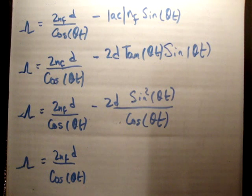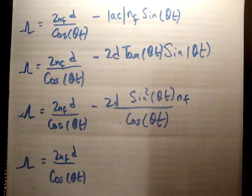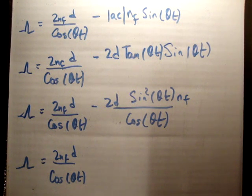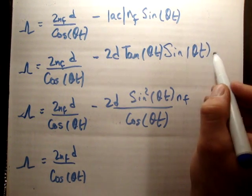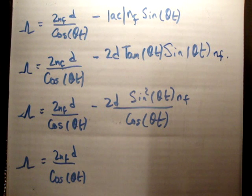So we're going to get that the optical path difference equals 2 times N sub f times d over cosine theta t. And because we have a common factor, if we take into account this N sub f as well, there's an N sub f up there. Sorry, I should have put that in from the start, N sub f. Because that means you can put out N sub f times d here.